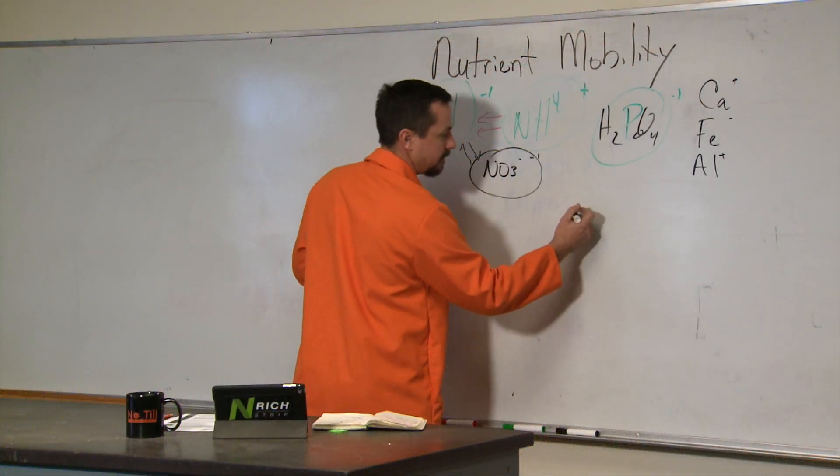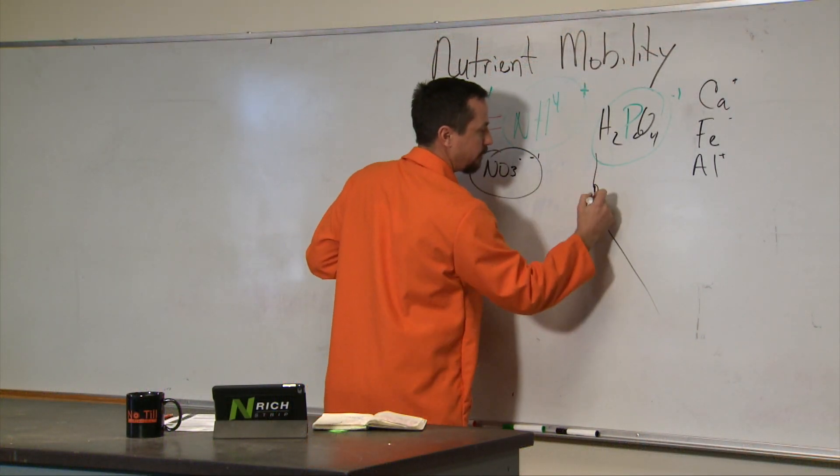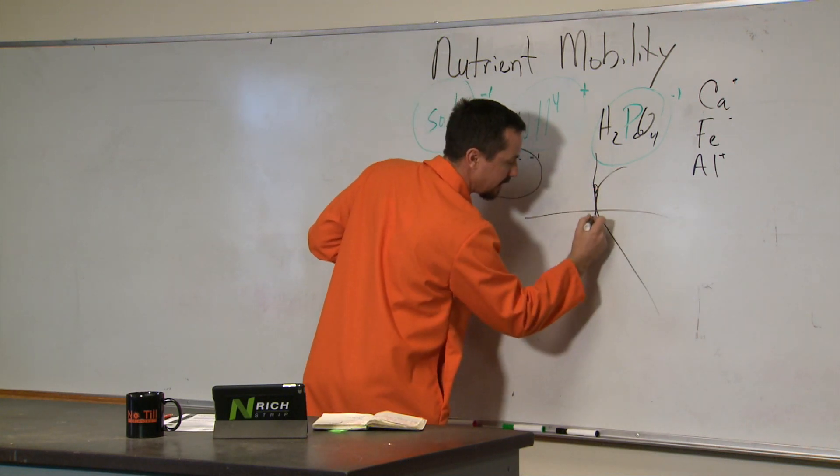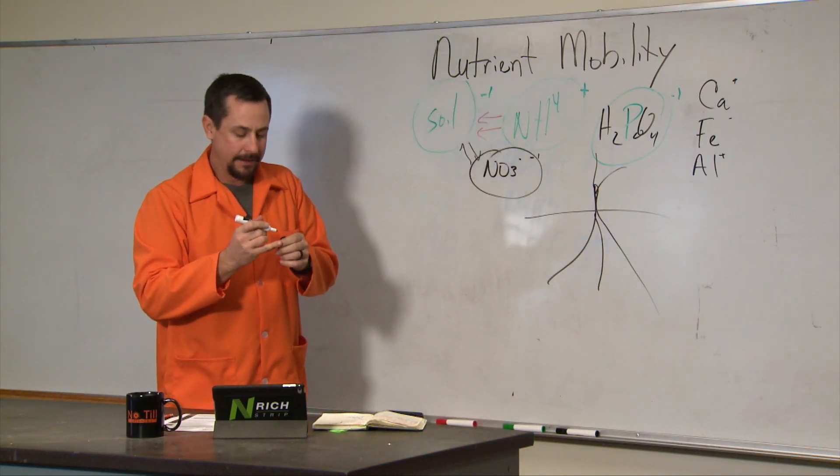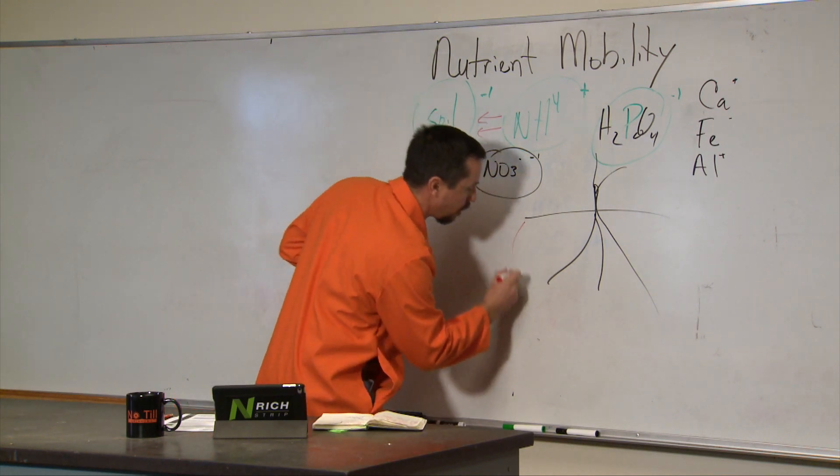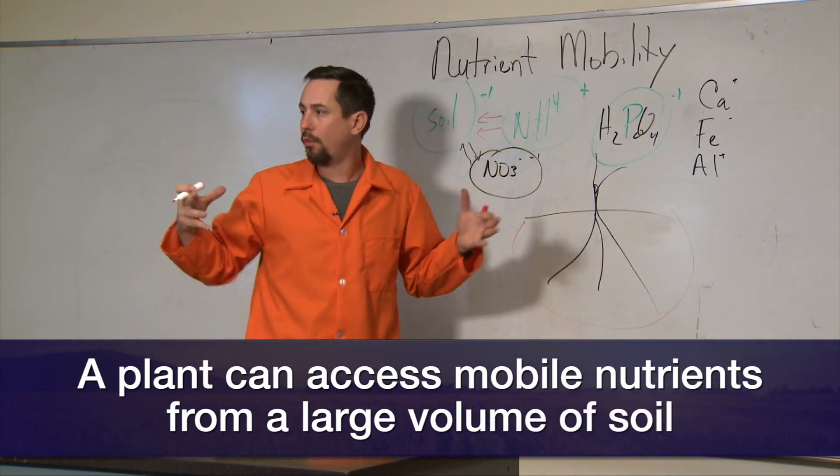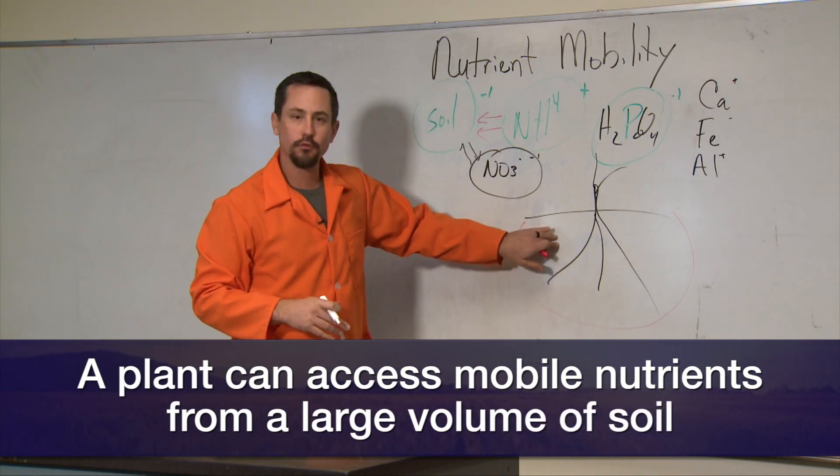A mobile nutrient—if you have the plant roots right here, my pretty plant here coming up, we have the plant, there's the soil, we have our plant roots—a plant can access mobile nutrients from a large volume of soil. Everything that plant can draw water from can reach it.